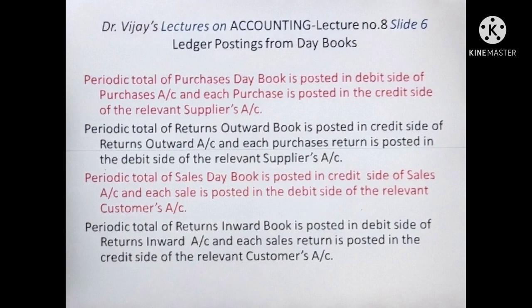To summarize the rules: Periodic total of Purchases Day Book → debit of Purchases Account; each purchase → credit of relevant supplier's account. Periodic total of Returns Outwards Book → credit of Returns Outwards Account; each purchase return → debit of relevant supplier's account. Periodic total of Sales Day Book → credit of Sales Account. Periodic total of Returns Inwards Book → debit of Returns Inwards Account; each sales return → credit of relevant customer's account.